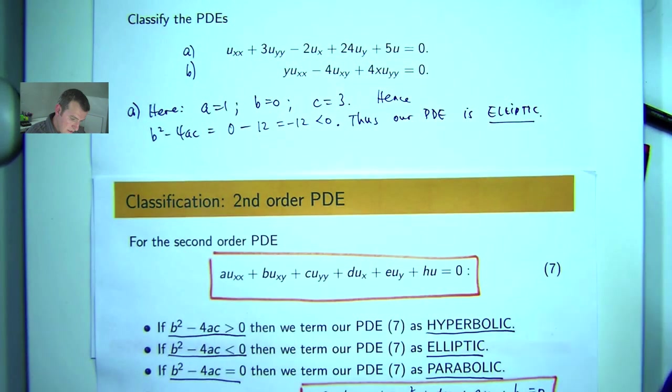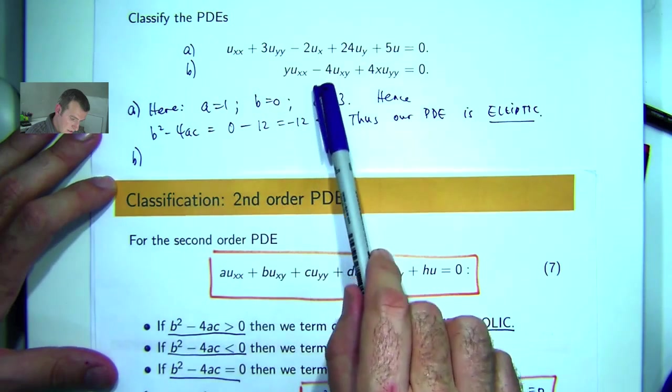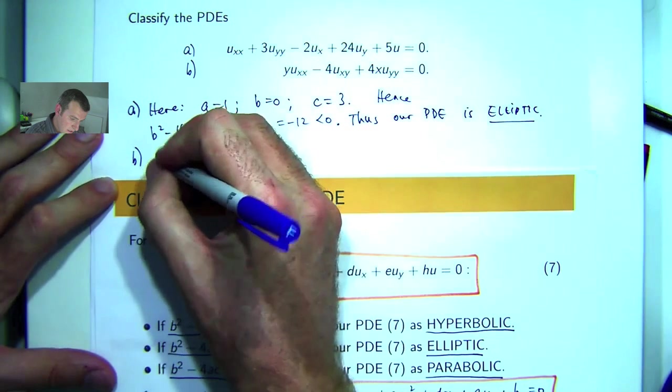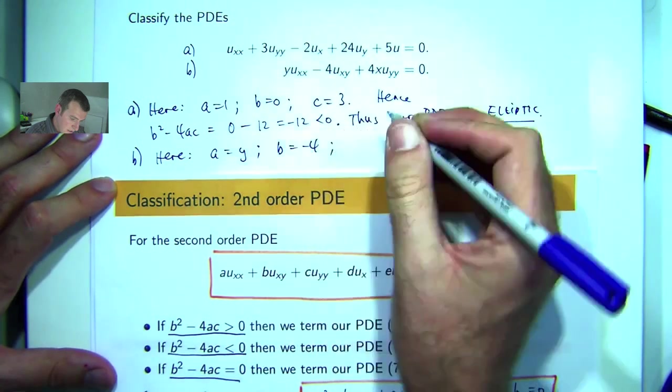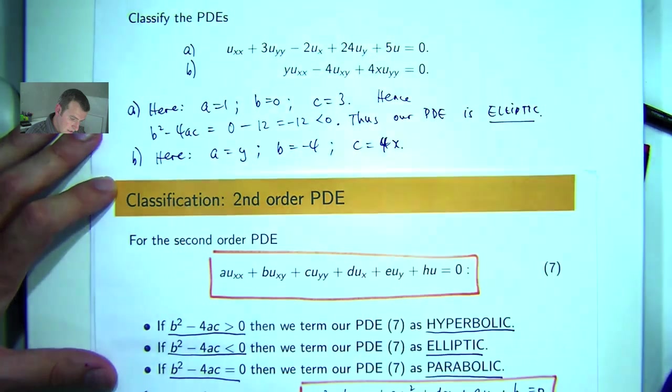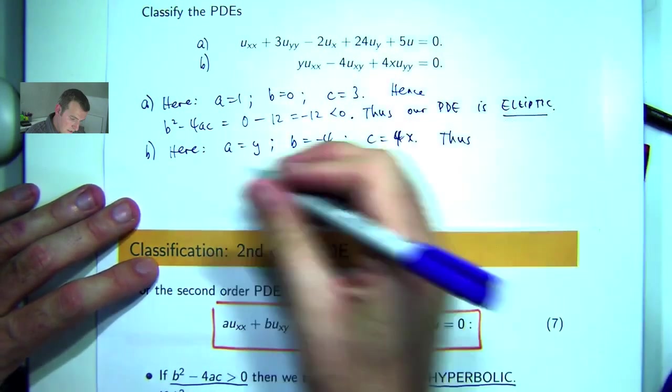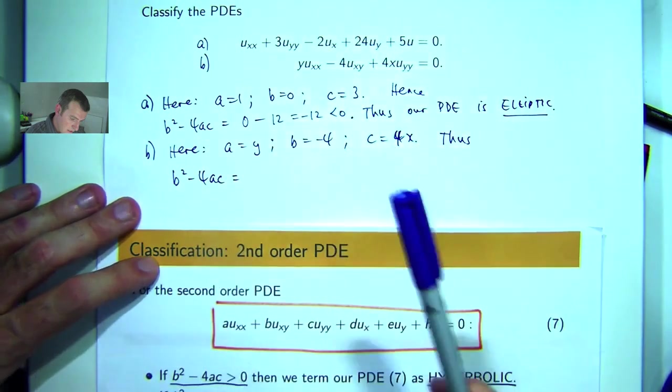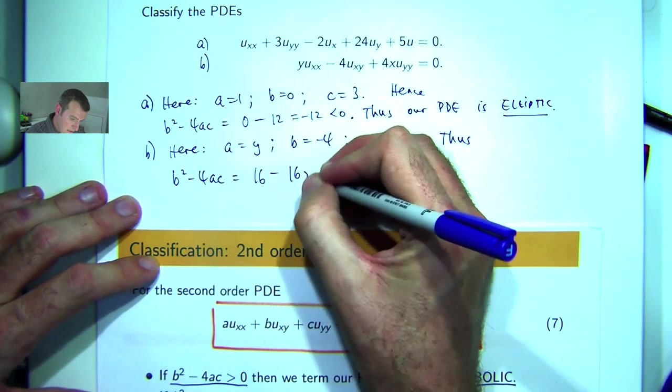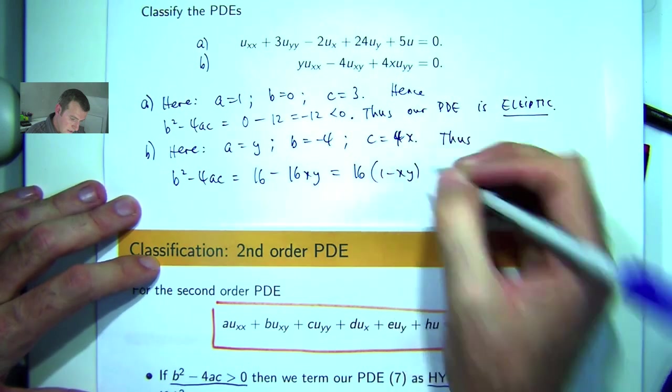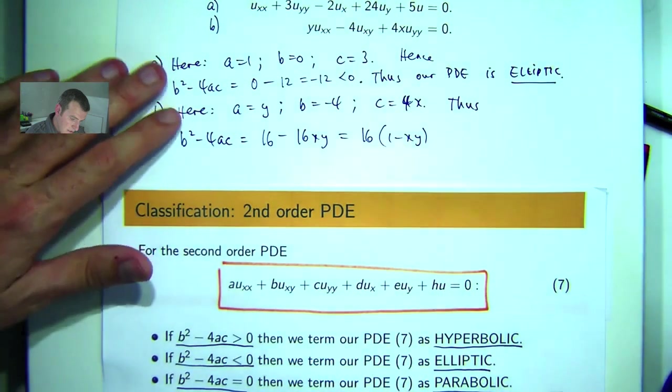Now for part B, it's a little bit more work. So here a would be y, b would be negative 4 and c would be positive 4x. So let's work out our discriminant. So we're going to get 16 minus 4 times that times that, so minus 16xy. And so the sign is dependent on the sign of this 1 minus xy.